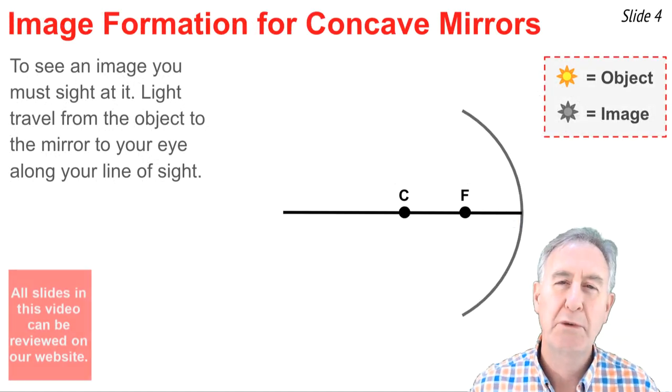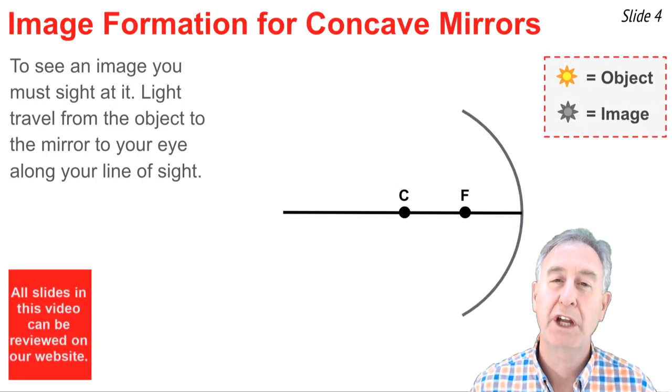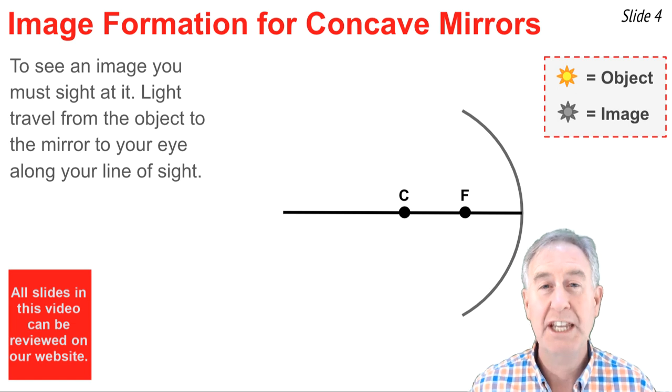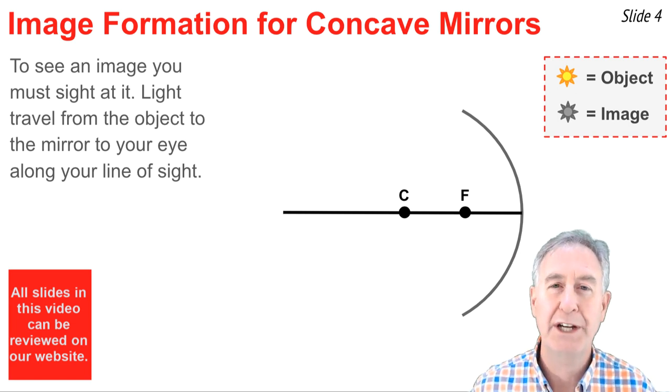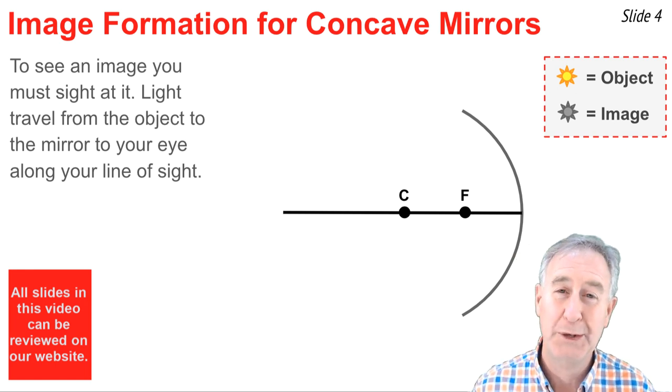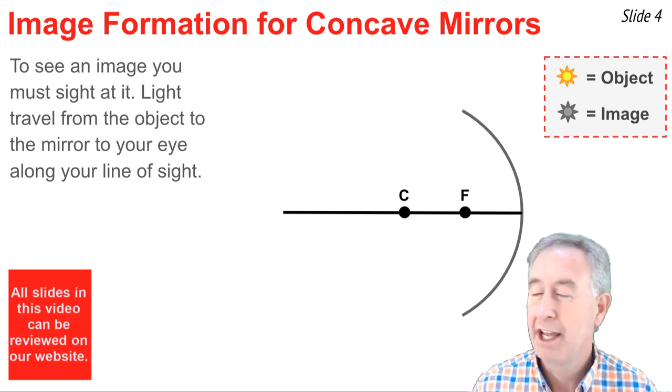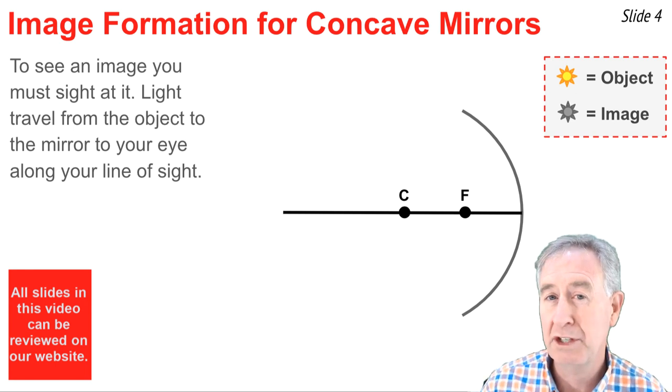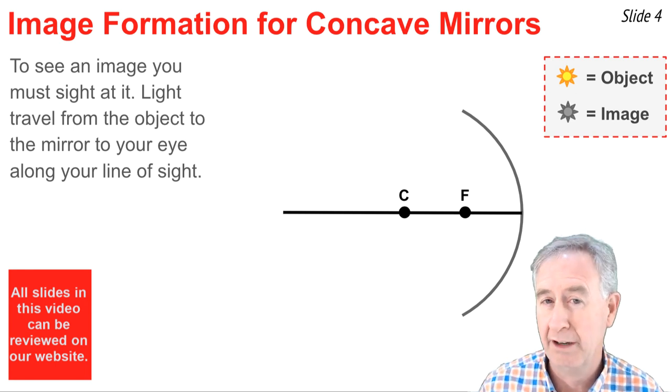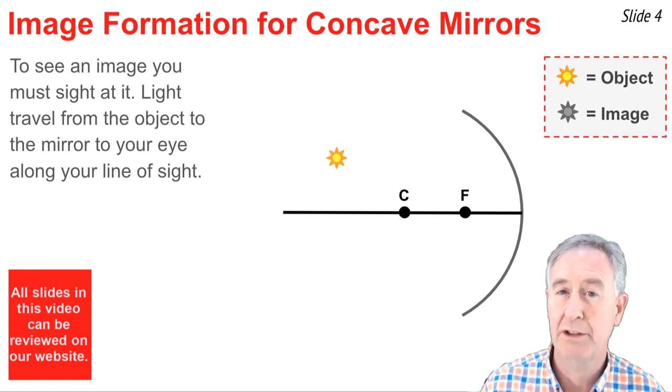The principles that work for plane mirrors work equally well for concave mirrors. To see an image, you have to sight along a line, and when you do, a ray of light will come from the object to the mirror and reflect along your line of sight to your eye. Here we have a concave mirror with the center of curvature and the focal point marked, and here is an object location.